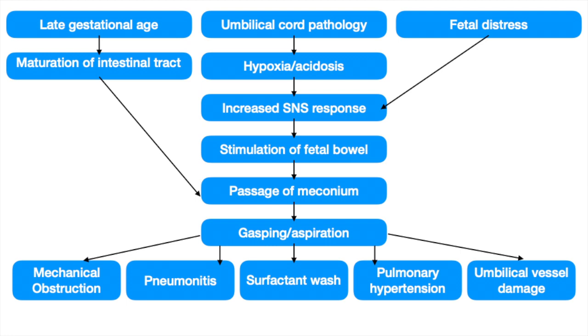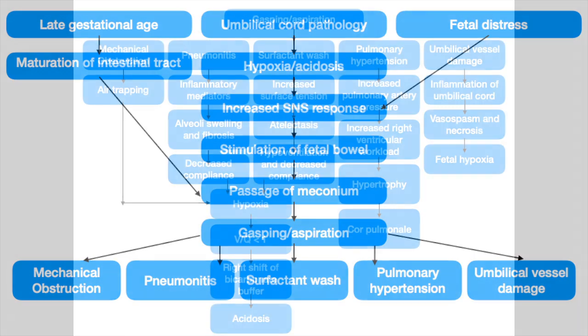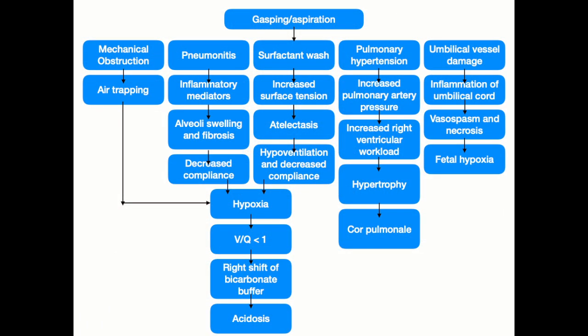If there's passage of meconium and the fetus begins gasping or aspirates in utero, we can see things like mechanical obstruction, pneumonitis, surfactant wash, pulmonary hypertension, and umbilical cord damage as a result. Each has particularly negative effects on the neonate.